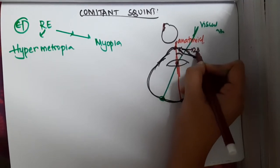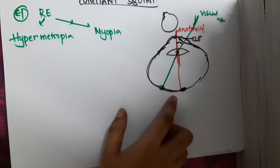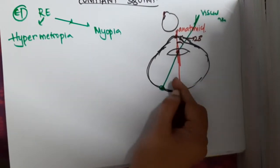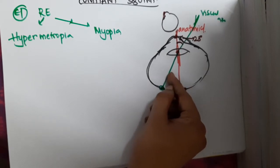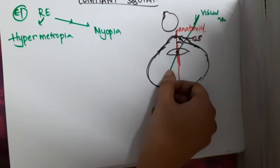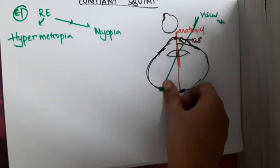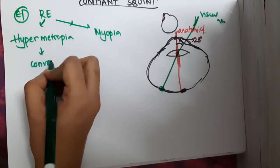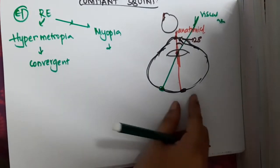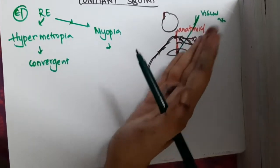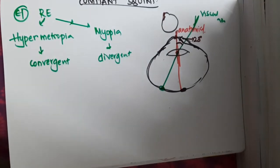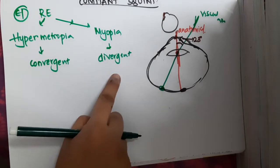The angle between the anatomical and visual axis is the kappa angle, which is almost 23 degrees. Whenever there is hypermetropia, the eye becomes smaller, and the visual axis moves a little towards the anatomical axis. As a result, there is convergent squint. Whereas in myopia, there is a bigger eyeball and the visual axis moves further away, resulting in divergent squint.